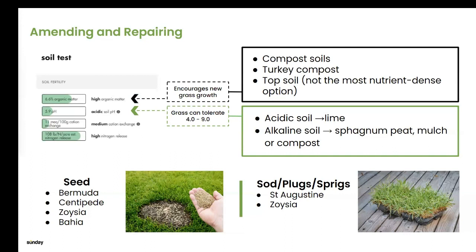When it comes to soil pH, grass can tolerate a broad range of 4.0 to 9.0. However, if your soil is more on the acidic side, it will cater better to some weeds like moss growth — in which case lime applications are recommended. If your soil is more on the alkaline side, you can use sphagnum peat, mulch, or compost to move that needle over time. Keep in mind it takes a lot of those amendments and time to move the needle significantly, so focus on adding organic matter and improving soil texture.